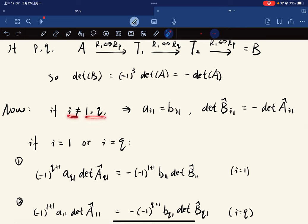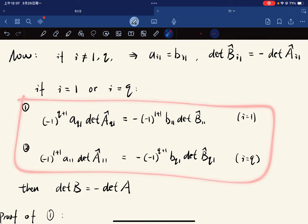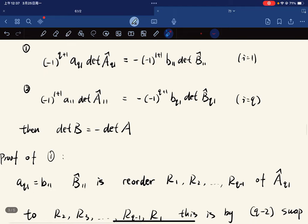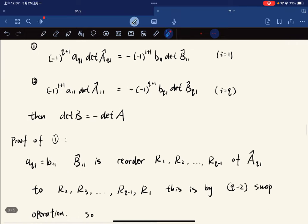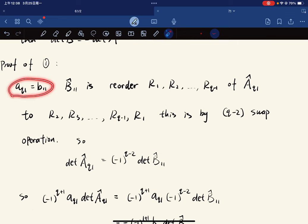Now, if i is not equal to one and q, then we have this. This is by induction hypothesis. If i is equal to one or i is equal to q, then we claim that we have these two equalities. So there is no typo. Then we know the determinant b is equal to negative determinant a if you just take the sum, which is our proof of one.